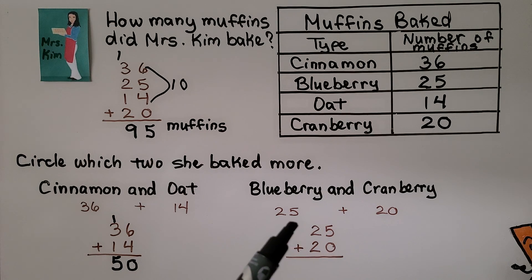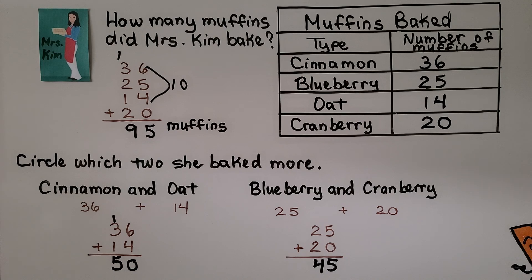Now we add blueberry and cranberry. We do the same. 5 plus 0 is equal to 5. That's 45. We're comparing 50 to 45. 50 has more tens. It's got 5 tens. This only has 4 tens. So 50 is greater. 50 is greater than 45. So circle which she baked more. She baked more cinnamon and oat.